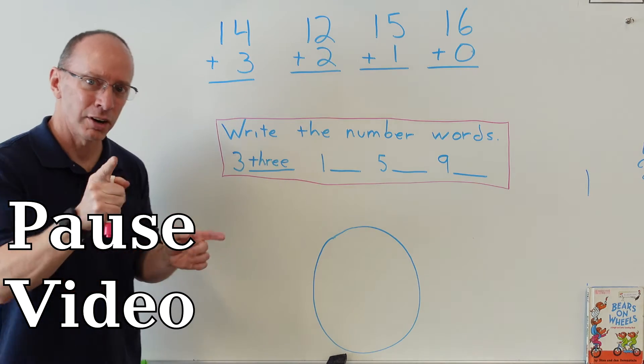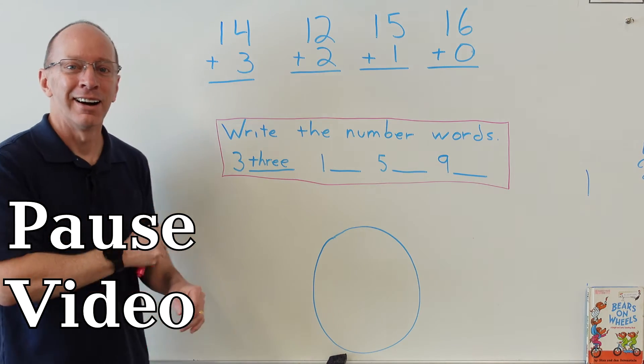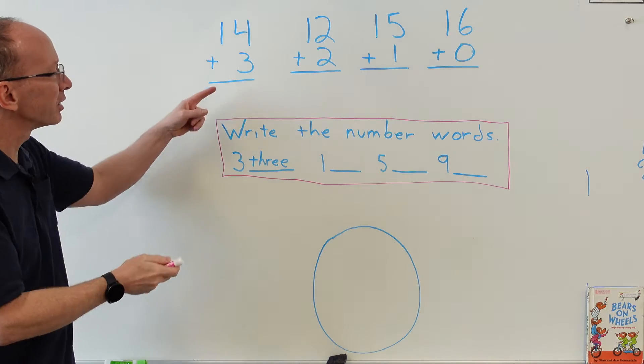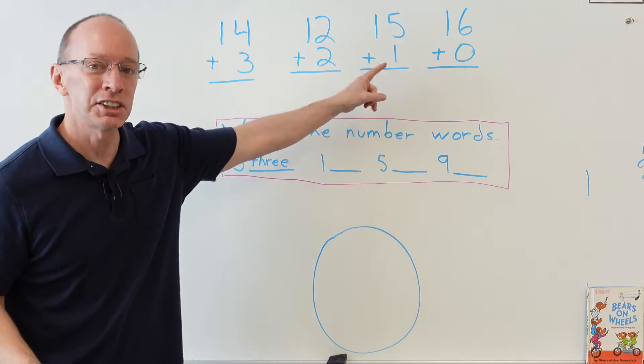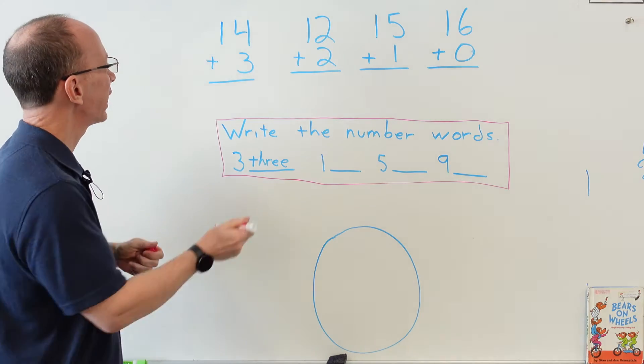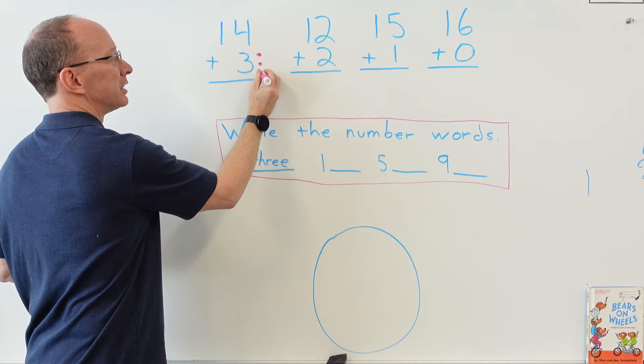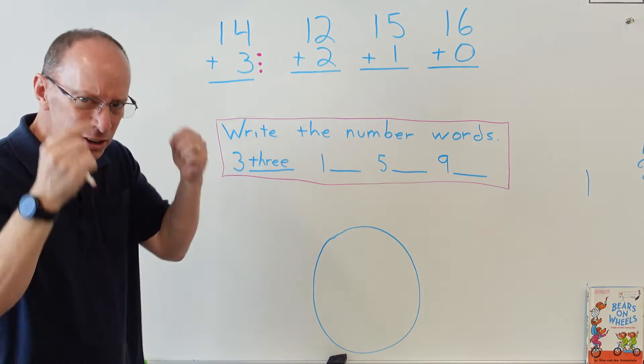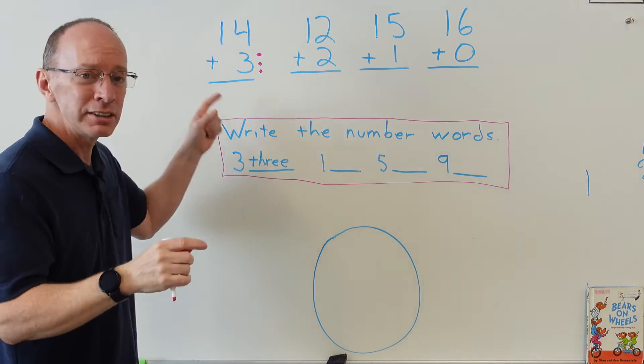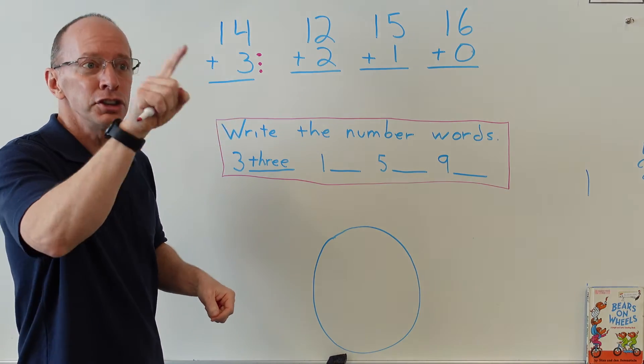All right, welcome back. Let's take a look at these four addition problems. We have 14 plus 3. When I do addition problems, I always love to imagine that the number 3 has three dots, and I always try to put that in my mind. When I'm counting a number, I kind of almost see it in the air, so I'll go 14, 15, 16, 17. So our answer would be 17.